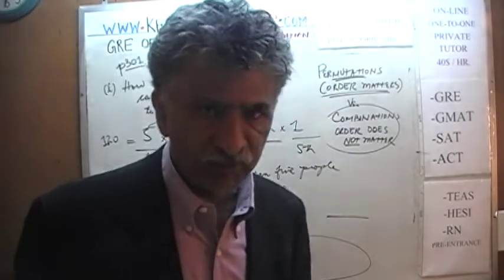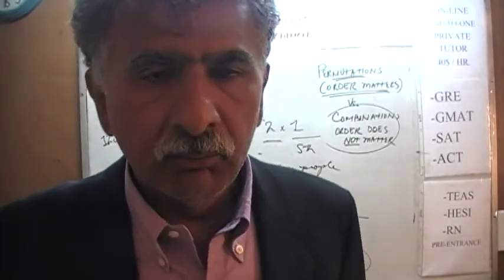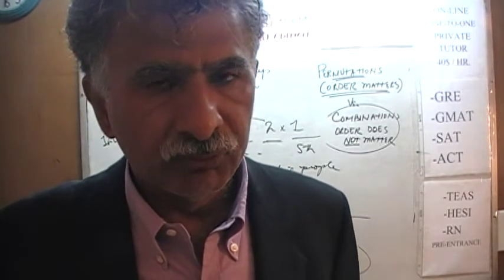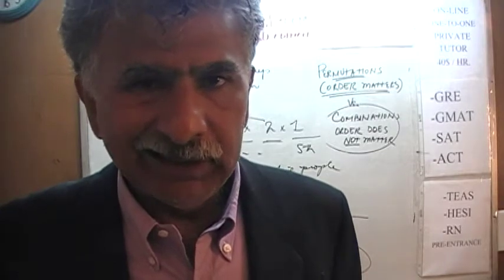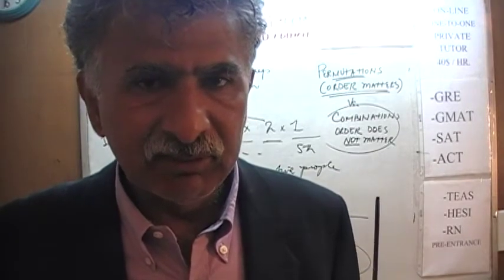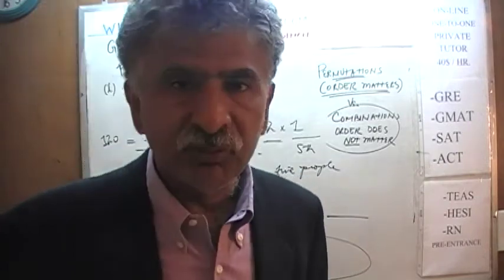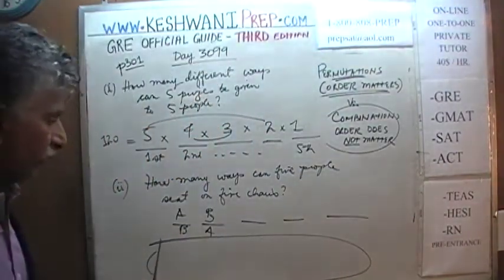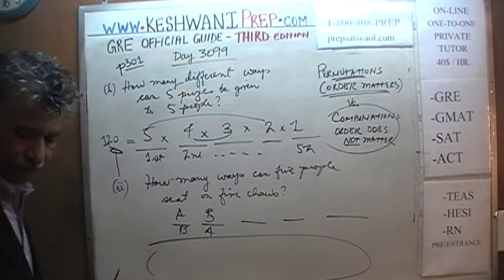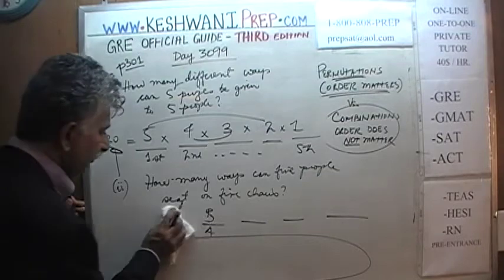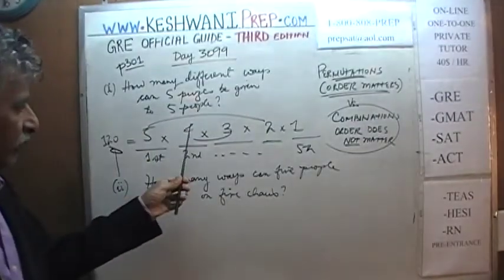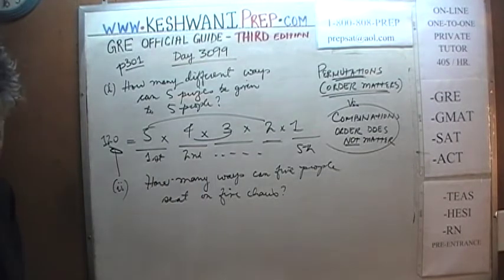This is not a combination problem. Even though we are not calling them first position, second position, etc., it does matter in what order people are sitting. A in the first seat and B in the second seat is not the same as B in the first seat and A in the second. Order matters — and therefore this is the exact same problem as the prizes. The answer is 120.